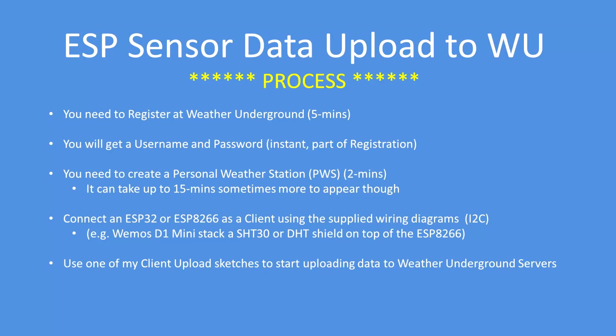What is the process? First, you need to register at Weather Underground - takes about five minutes. You'll get a username and password instantly as part of registration. Then create a personal weather station, which takes about two minutes, though it can take about 15 minutes to appear on the map. Finally, connect an ESP32 or ESP8266 as a client using the wiring diagrams supplied, then use one of the client upload sketches to start uploading data.